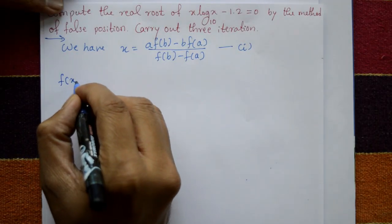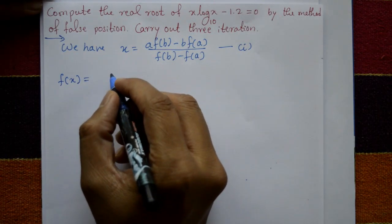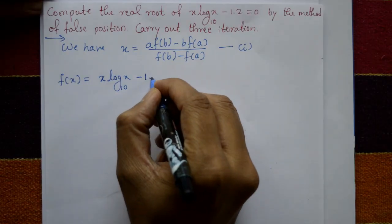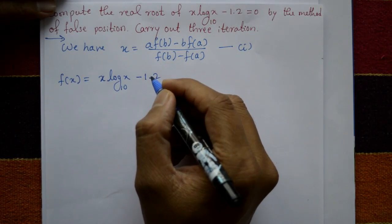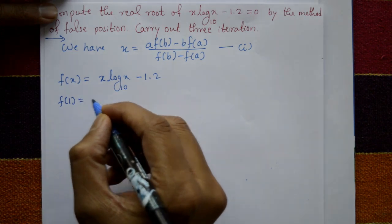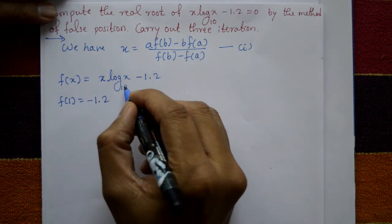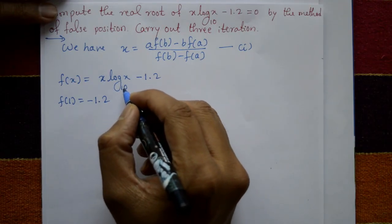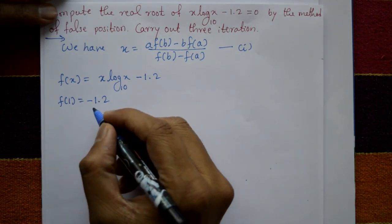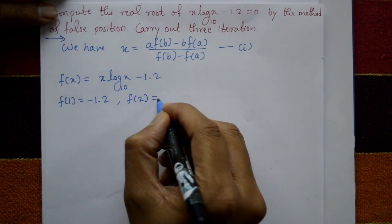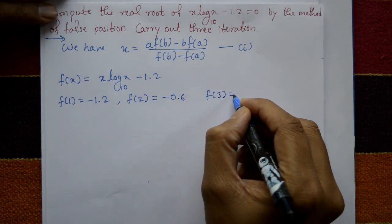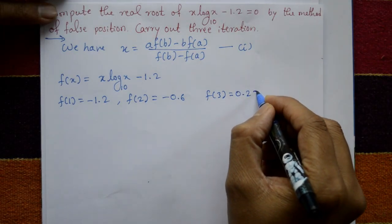f(x) is given as x·log₁₀(x) - 1.2. To find the real roots, evaluate at trial points: f(1) = -1.2, f(2) = -0.6, and f(3) = +0.23.